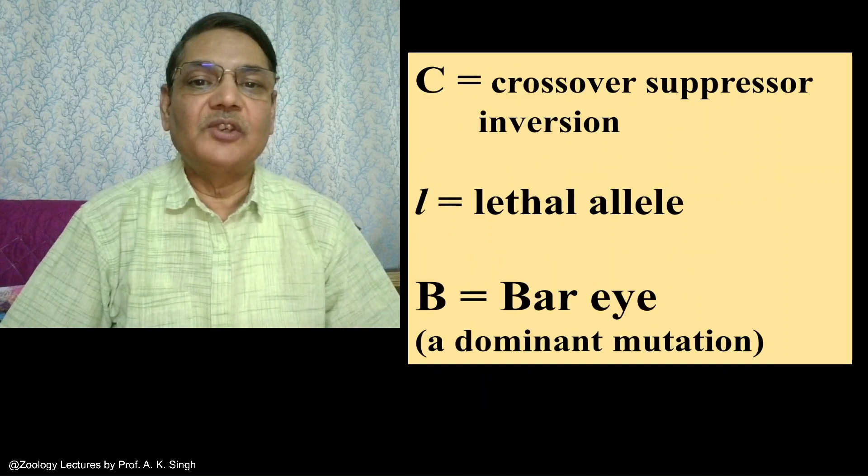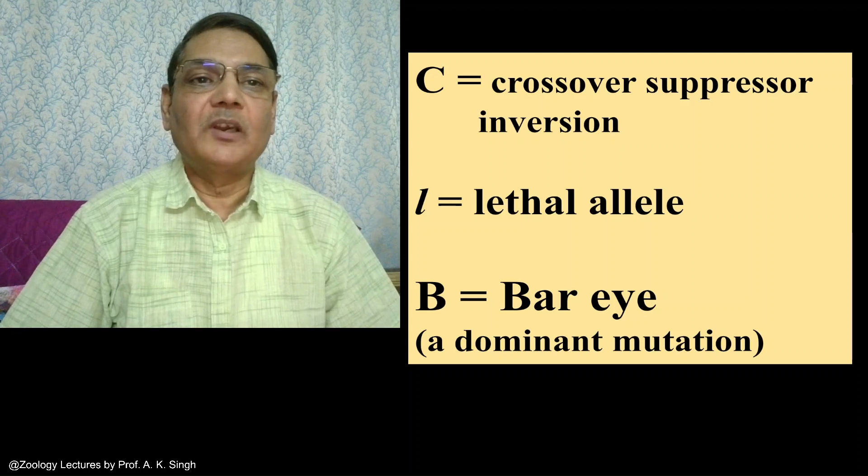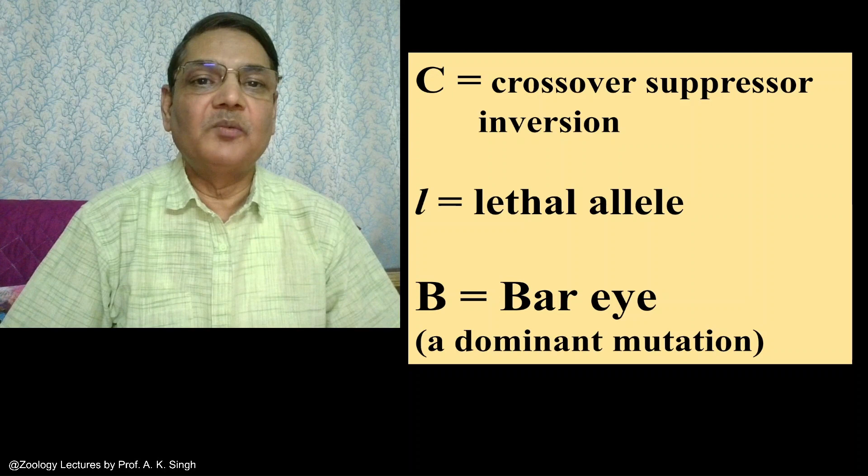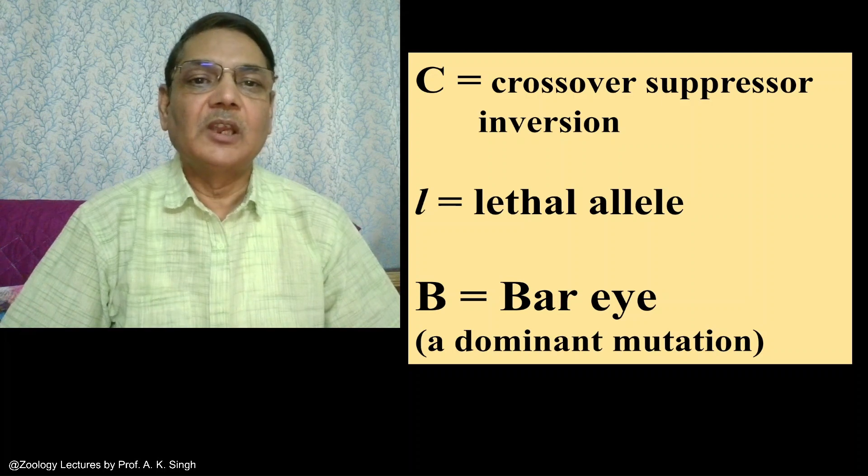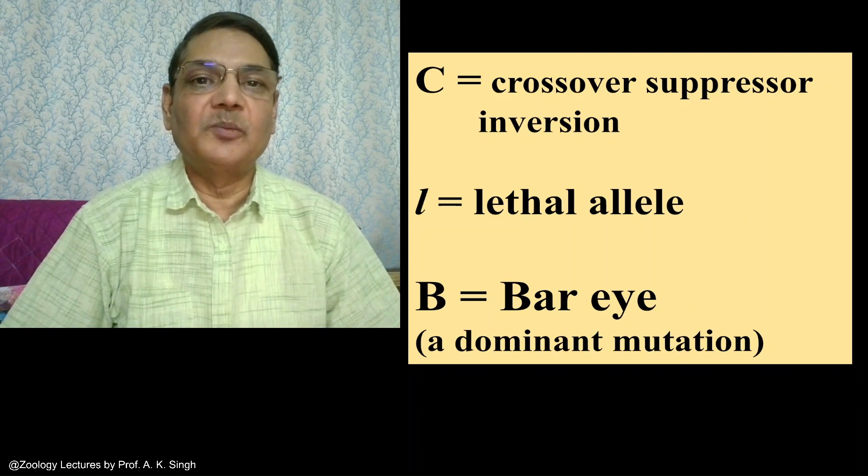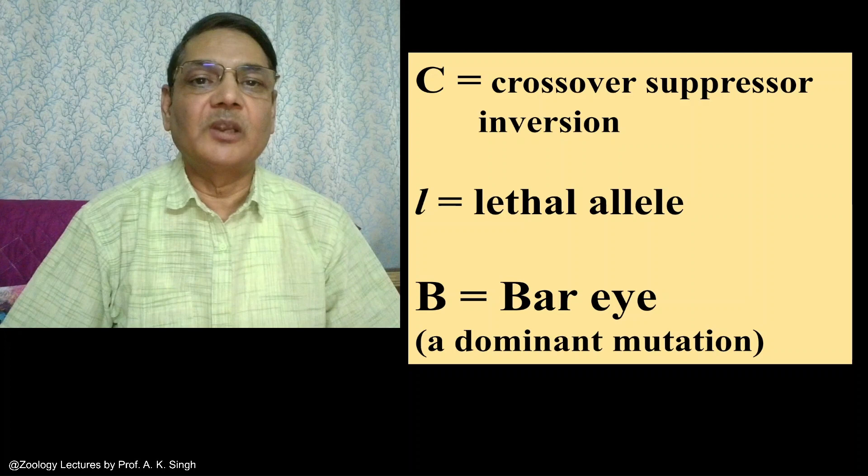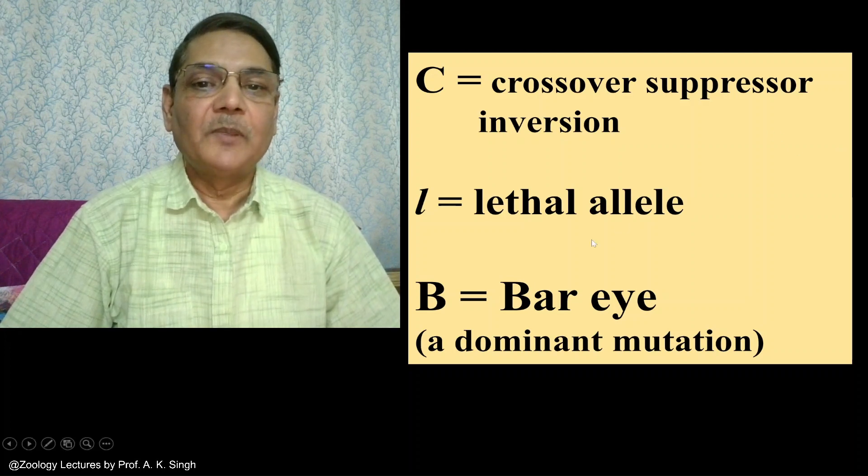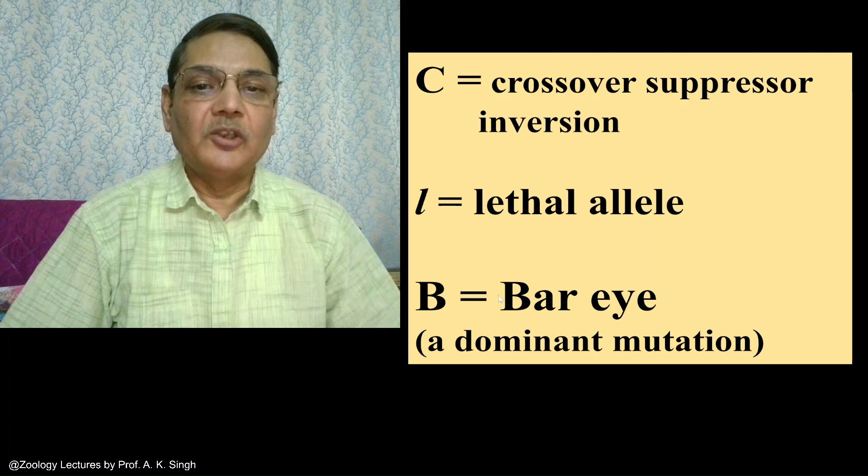We need the strain CIB in Drosophila melanogaster to demonstrate this experiment, where C stands for crossover suppressor inversion. This inverted portion suppresses crossing over in its vicinity. L stands for lethal allele, and B stands for bar eye in which the eye size gets considerably reduced. This is a dominant mutation.